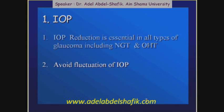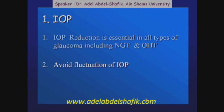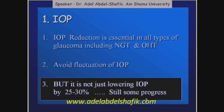The second point: we should avoid fluctuation of the intraocular pressure. But it is not just about lowering the IOP by 25% to 30%. Still, after achieving that, some cases may show progression.